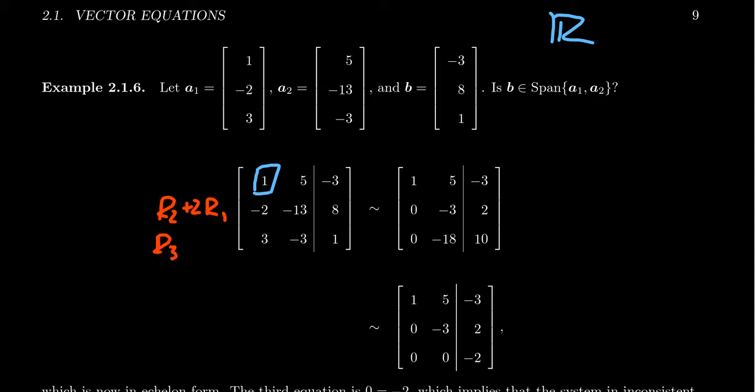Row 3 will be subtract from it 3 times row 1. So we get 2, 10, negative 6. We're also going to get negative 3, negative 15, plus 9. The second row will become 0, negative 3, and 2. The third row will become 0, negative 18, and 10.